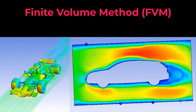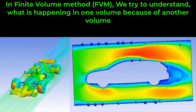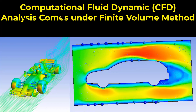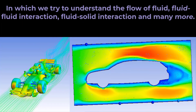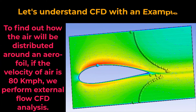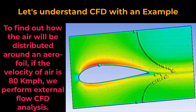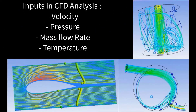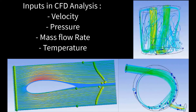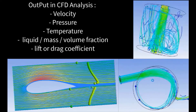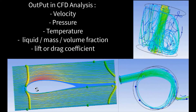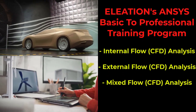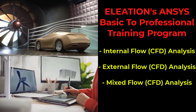The next method is the Finite Volume Method (FVM). In this method, we aim to understand the influence of one volume on another. Computational Fluid Dynamics (CFD) Analysis falls under the Finite Volume Method, where we explore fluid flow, fluid-fluid interaction, fluid-solid interaction, and more. For instance, to determine how air will distribute around an aerofoil when the air velocity is 80 kmph, we perform an external flow CFD analysis. In CFD analysis, we input variables like velocity, pressure, mass flow rate, and temperature, and derive outputs like velocity, pressure, temperature, liquid mass volume fraction, and lift or drag coefficient. In Eleation's ANSYS Basic to Professional Training Program, we cover internal flow, external flow, and mixed flow analysis in detail.